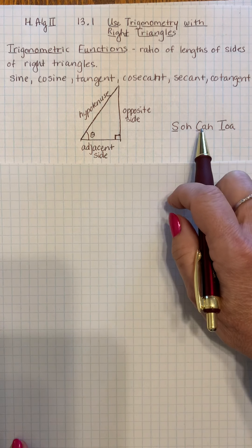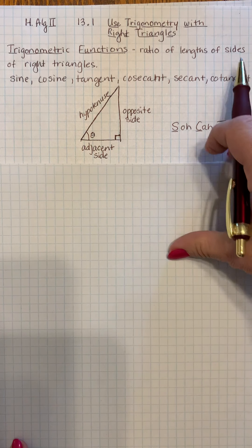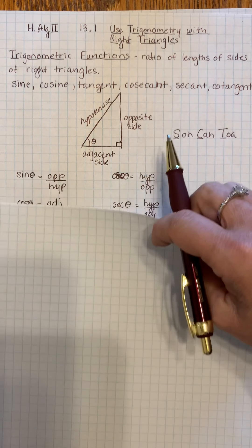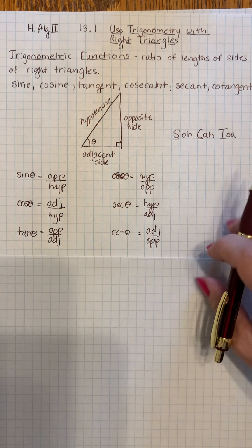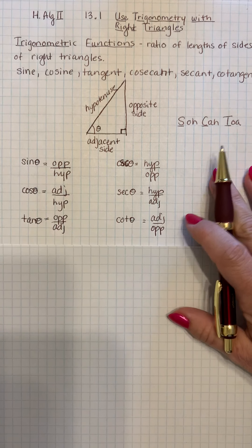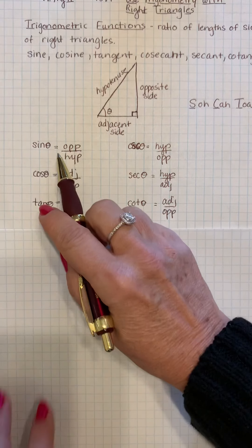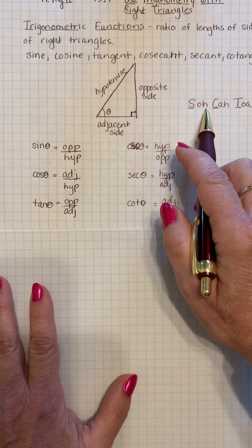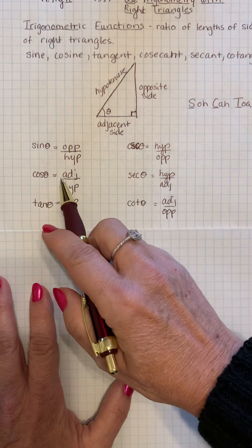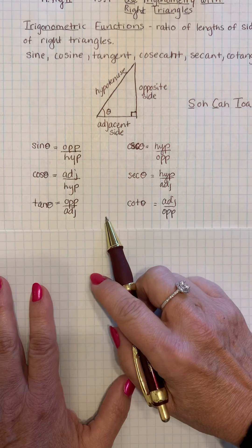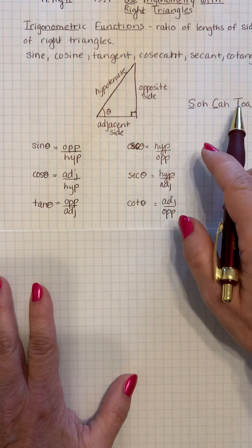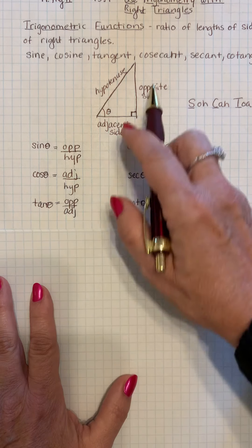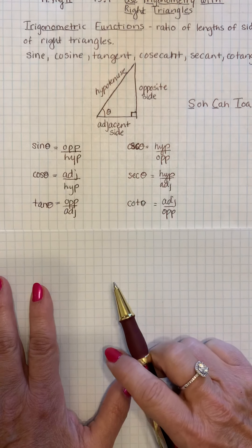So this is the sine, cosine, and tangent, and what they end up being is ratios. The sine is the opposite over the hypotenuse. The cosine is the adjacent over the hypotenuse, and the tangent is the opposite over the adjacent. Ratios of the sides of the triangle.